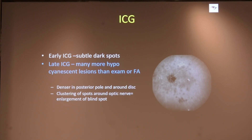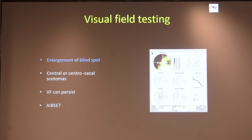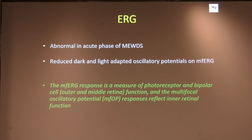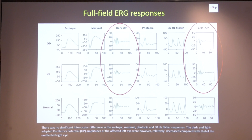ICG also has a role, showing many more hypofluorescent lesions than seen on FA. These are denser in the posterior pole and around the disc. The clustering of spots around the optic nerve explains the enlargement of the blind spot on perimetry. On visual field testing, enlargement of blind spots is seen, and many cases show abnormal ERG findings in the early phases, with reduced oscillatory potentials on multifocal testing. Multifocal ERG response measures photoreceptor and bipolar layer function, while multifocal oscillatory potentials reflect inner retinal function.